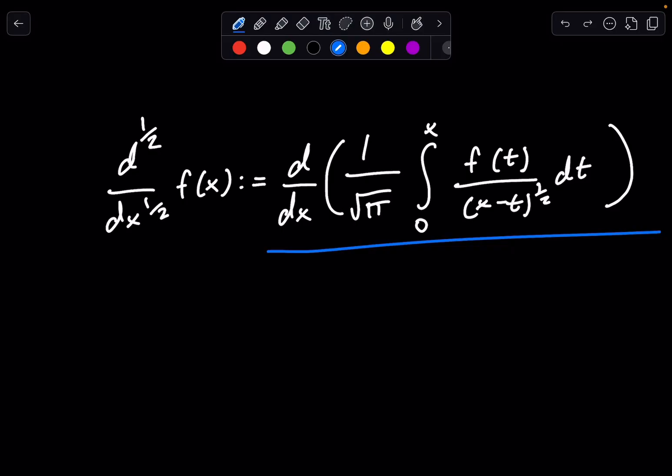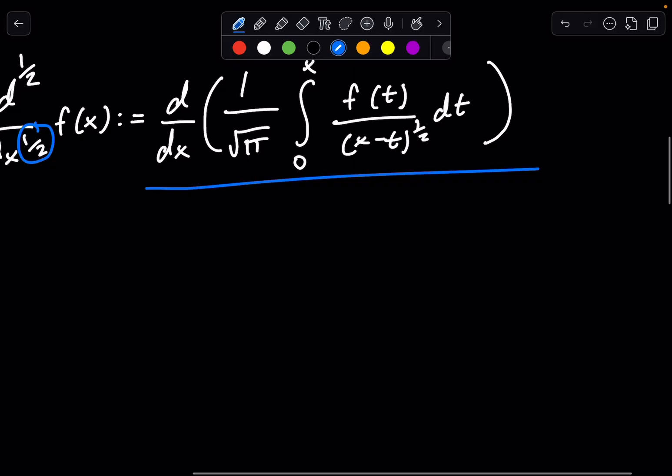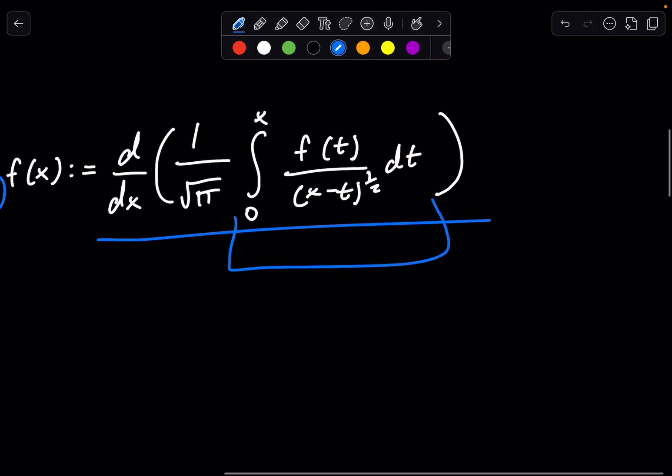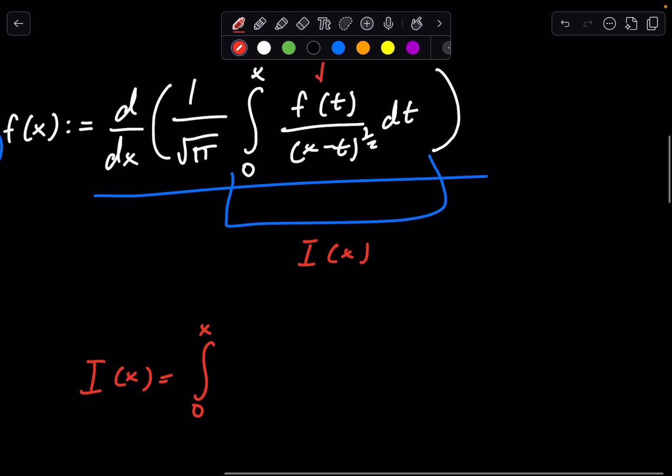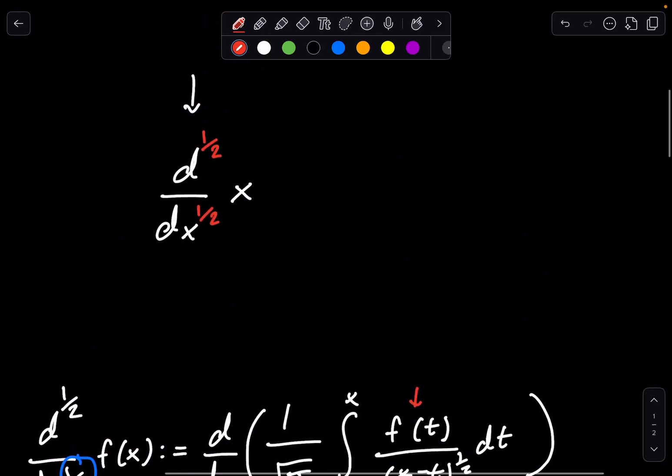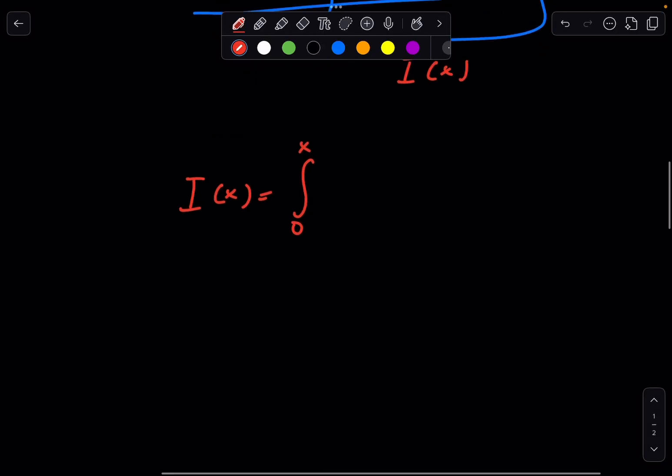And then we're going to generalize it to other fractional powers that might not be 1/2. So, if we look at our integral, we can define this integral part right here to be I(x), just normal calculus. We can say I(x) is equal to integral 0 to x of, and this is f(t). f(t), in this case, is just going to be x right here, so we're going to replace it with t, all over (x minus t) to the 1/2 power dt.